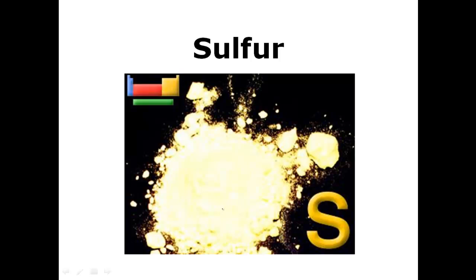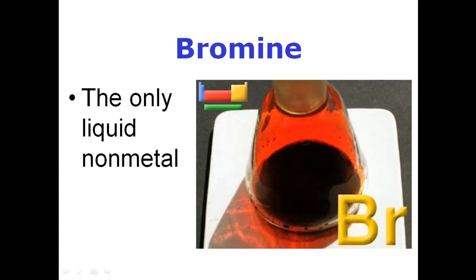Some examples of a brittle, solid nonmetal would be sulfur. It's yellow, and when you crush it, it turns into powder. When you hit it with a hammer, it'll explode into smaller particles. It is brittle. It will not bend. A metal would bend. Here's bromine. This is our liquid nonmetal. It's a reddish liquid, and in this case, it's evaporating readily into reddish gas as well.